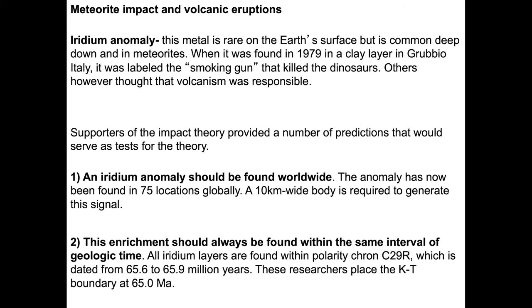If the extinction event is caused by the impact of a bolide — an asteroid or a meteor — versus volcanic eruptions, we look for a couple different things to differentiate between the two. In 1979, an iridium anomaly was discovered in Gubbio, Italy. This was a huge event, known as the smoking gun that killed the dinosaurs. Supporters of this theory provided a number of predictions to serve as tests. If this was a worldwide event, we should find iridium around the world — and indeed the iridium anomaly has been found in 75 locations globally. It's been estimated that a 10-kilometer-wide body would be required to generate that iridium layer around the world.